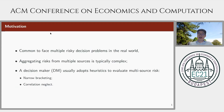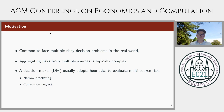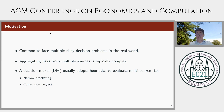It's common for us to face multiple risky decision problems in the real world, like consumptions in different periods and portfolio choices in different financial markets. However, it's complex to rationally aggregate risks from multiple different sources. As a result, decision makers usually adopt heuristics to evaluate such multisource risk. In this talk, we are going to consider two of them: narrow bracketing and correlation neglect.